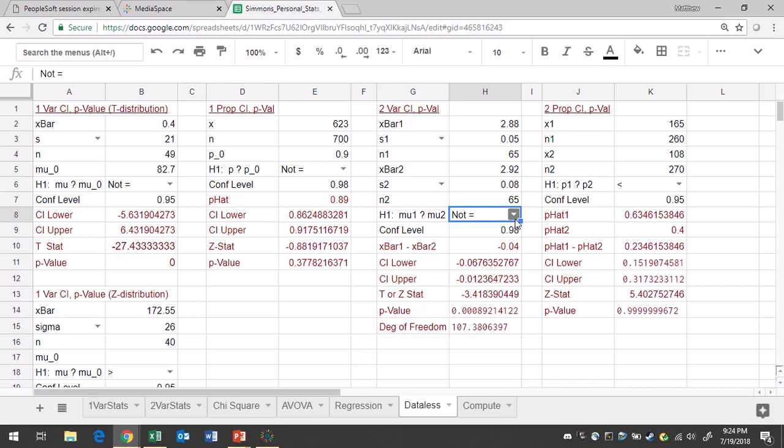Alternative hypothesis, you have less than. So looky here, we have our test statistic of negative 3.42 and the p-value of 0.0004.